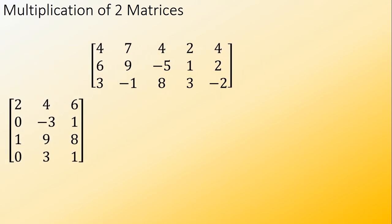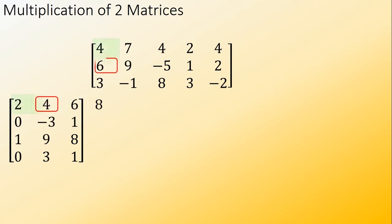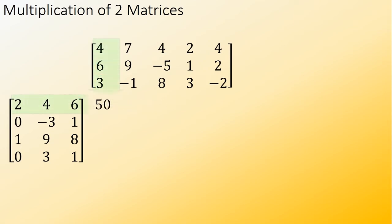Follow this series of multiplication, then addition of entries. For the first entry: 2 times 4 equals 8, 4 times 6 equals 24, 6 times 3 equals 18, and then adding them is equal to 50.